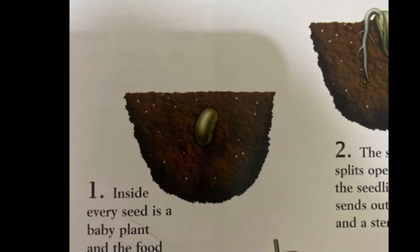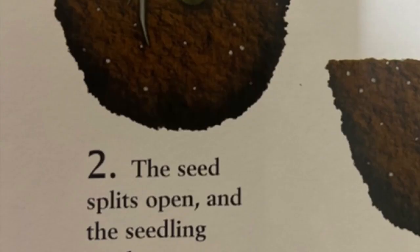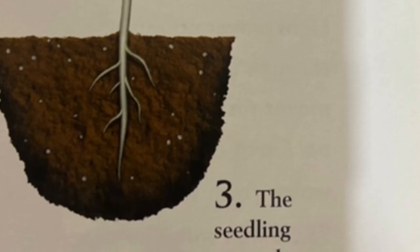Inside every seed, there is a baby plant and the food the plant needs. The seed splits open and the seedling sends its roots out. The seedling grows leaves and makes its own food.